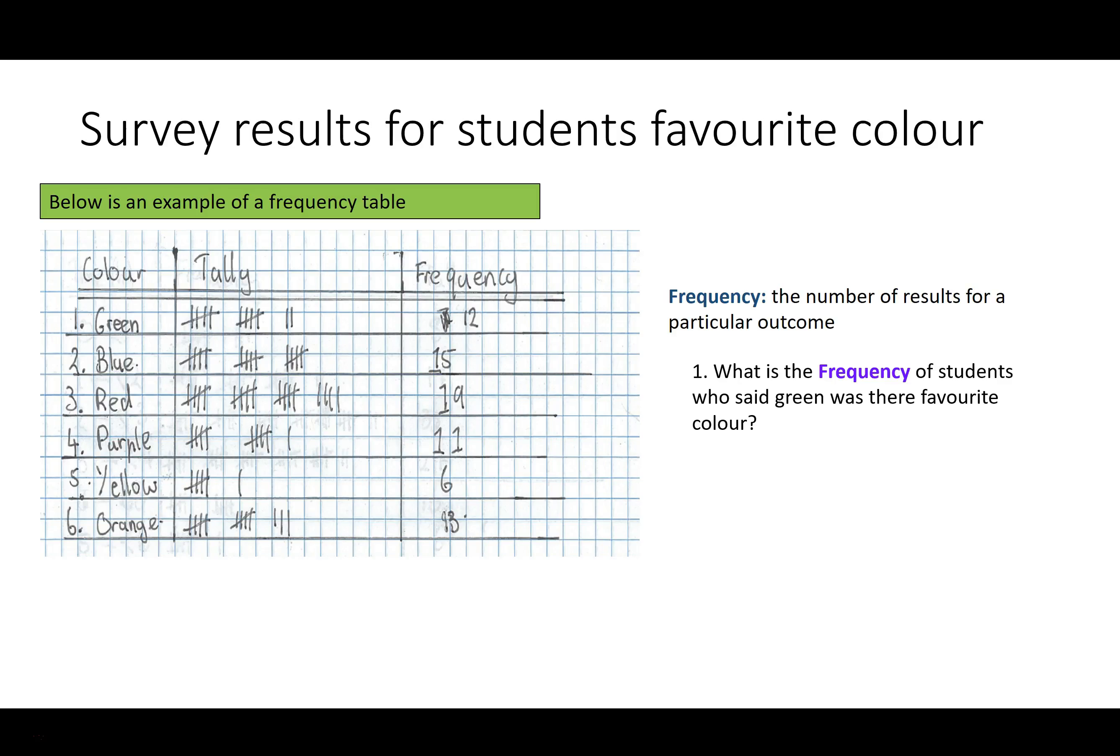What is the frequency of students who said green was their favourite colour? In student terms this just means the number of students who chose green. In this case it's 12.